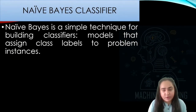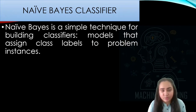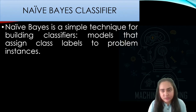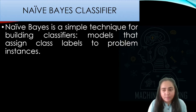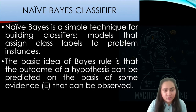The Naive Bayes classifier is a simple technique for building classifiers. Classifiers are models that assign class labels to problem instances. For example, you could classify a tweet as a positive or negative tweet, or classify an object as a red or blue object. Those are classification problems.